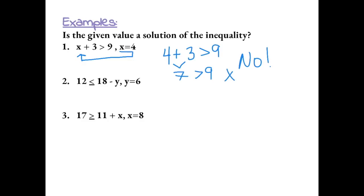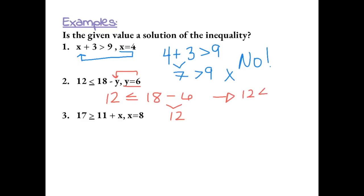Example 2: 12 is less than or equal to 18 minus y, when y equals 6. Let's plug 6 into our inequality: 12 is less than or equal to 18 minus 6. Simplifying the right side gives us 12, so we have 12 is less than or equal to 12. This is a true statement because 12 is equal to 12, so this is a solution.